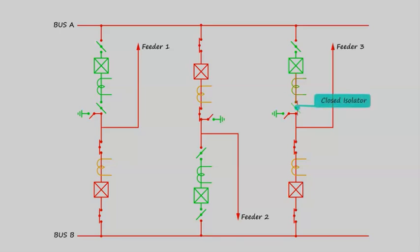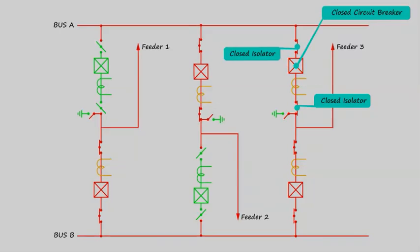We will close this line side isolator associated with feeder 3 towards bus A and the bus A side isolator. Then from control room, we close the circuit breaker associated with bus A or towards bus A. At that instant...